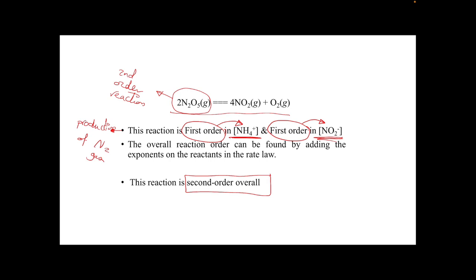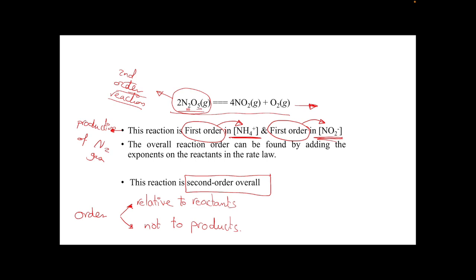We are not dealing with the products. Order is relative to reactants, not to products. In the dinitrogen pentoxide reaction with only one reactant, this is a second-order reaction — second order for dinitrogen pentoxide — and the overall order is also second order.